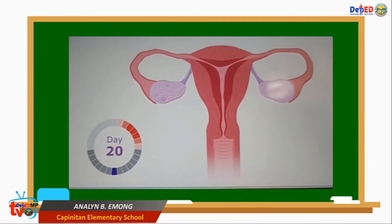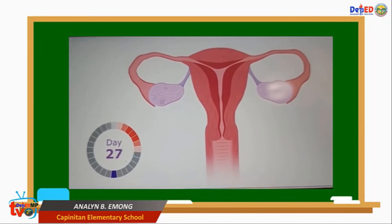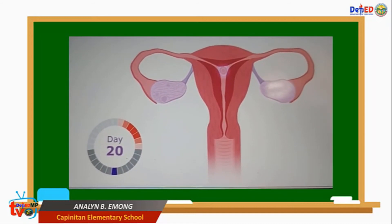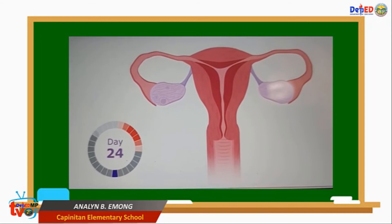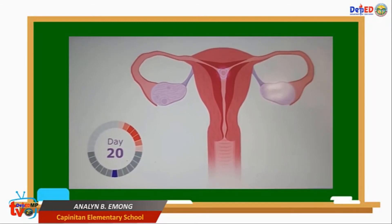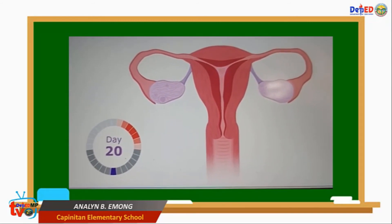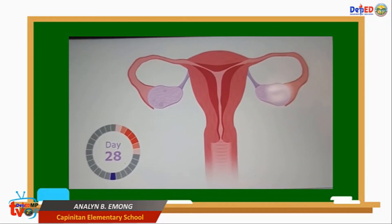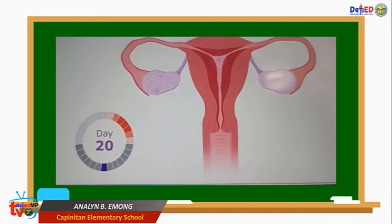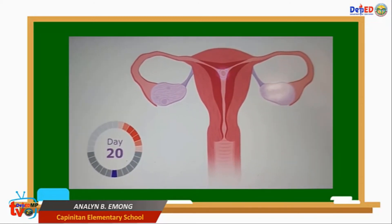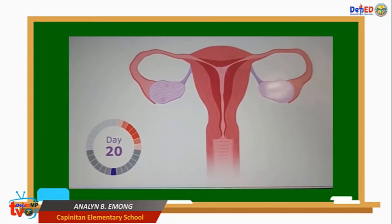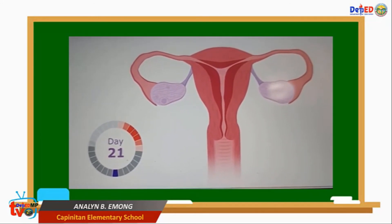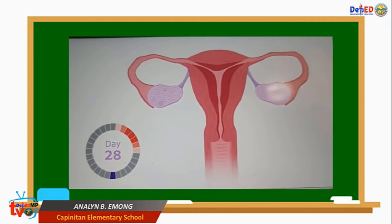Phase 4: The lining of the uterus, called the endometrium, becomes thicker in preparation for implantation of the fertilized egg. If fertilization takes place, the lining of the uterus stays in place and no new egg is released. If fertilization does not take place, menstruation happens and the next menstrual cycle is about to begin.